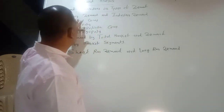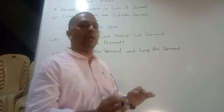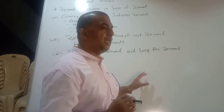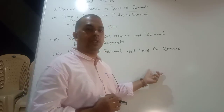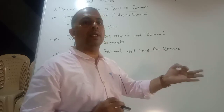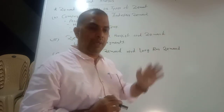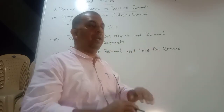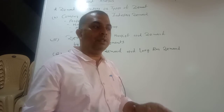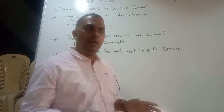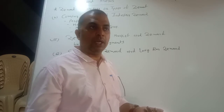Now, type number four: company demand and industry demand. Company demand means demand for the product of a particular company. For example, Colgate is a brand, Colgate is a company — so demand for Colgate toothpaste is an example of company demand. Demand for Maruti car is an example of company demand. But when we talk about demand for all cars or the automobile industry, that is called industry demand. When demand for all toothpastes together, it is called industry demand.